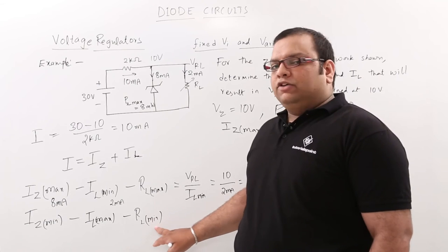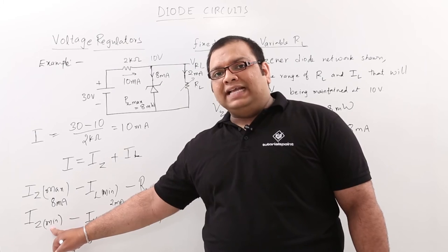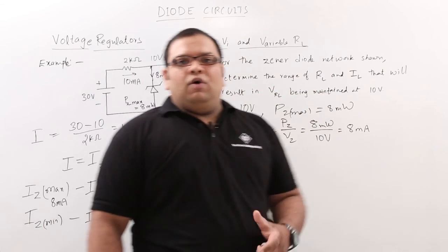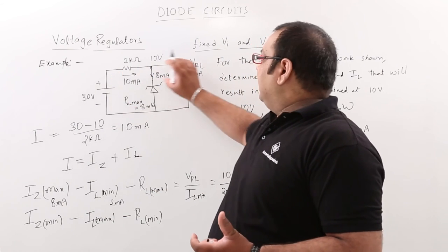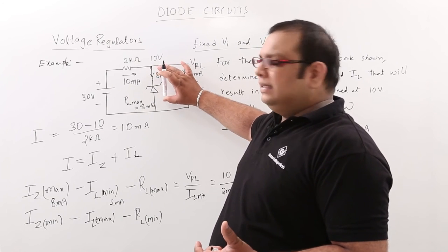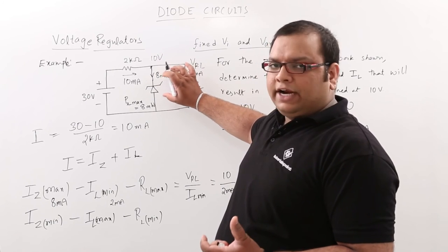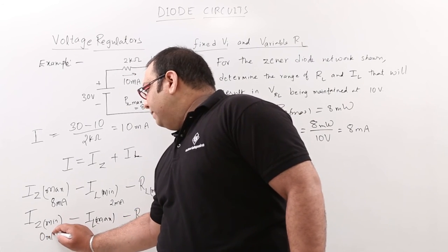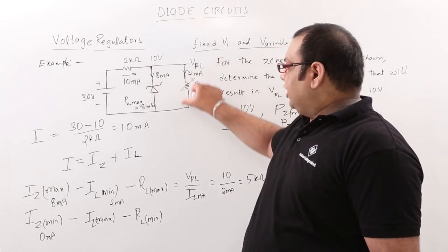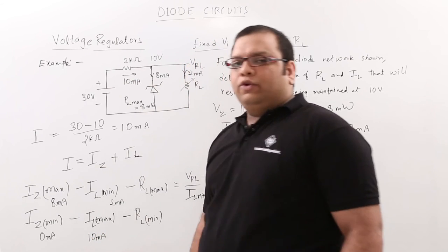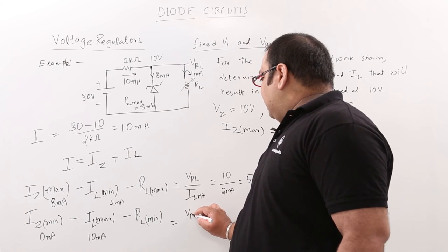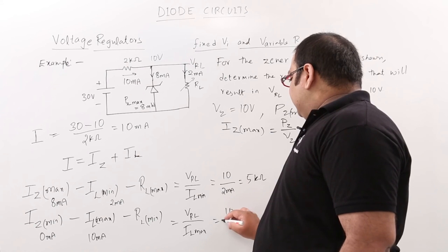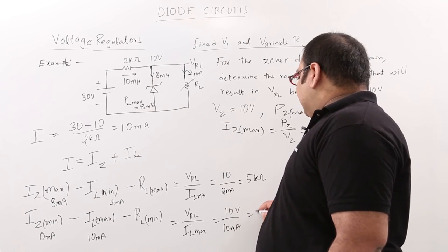For minimum RL, we need IL maximum, which requires IZ minimum. Since IZ minimum is not given in this problem, we consider the case where no current enters the Zener diode — IZ minimum is taken as 0 milliamps. In that case, the total 10 milliamps enters the load only. So IL maximum = 10 milliamps, and RL minimum = VRL / IL maximum = 10 volts / 10 milliamps = 1 kilo ohm.